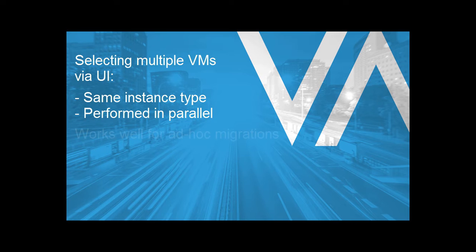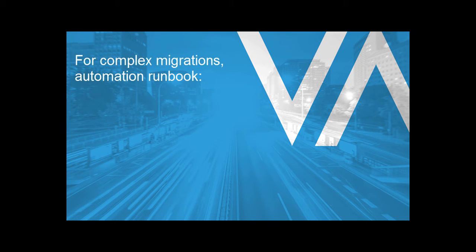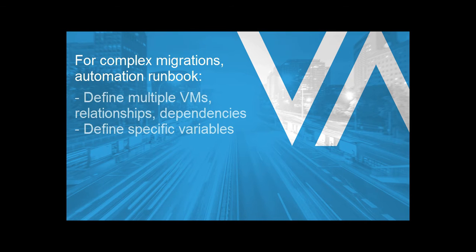This works well for ad hoc movement, but for more complex applications or sets of VMs, we recommend using Velostrata's automation runbook feature, which enables us to define a list of multiple VMs, their relationships and startup dependencies, as well as more granular cloud provisioning options such as instance types, subnets, static IPs, and such. The automation runbook is in CSV format and easy to manage for mass migration projects.